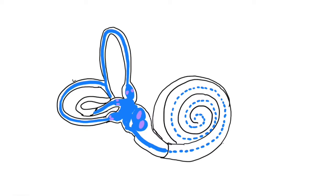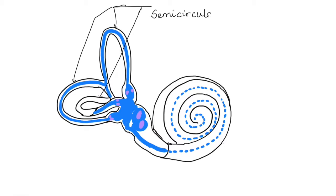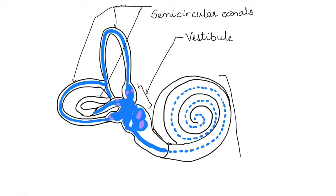Let us see the diagrammatic representation of this. We have already done the diagram of the inner ear. The three rings visible here are the semicircular canals. Next to that is the vestibule, and the coiled snail-like structure is the cochlea. The cochlea, vestibule, and semicircular canals together form the bony labyrinth.